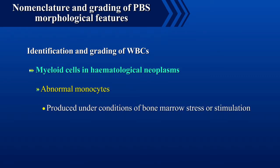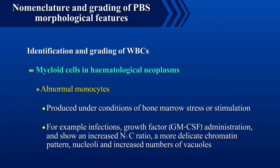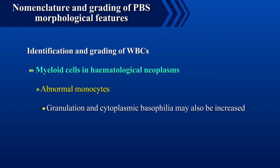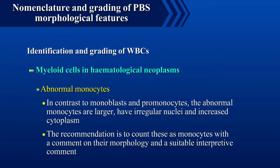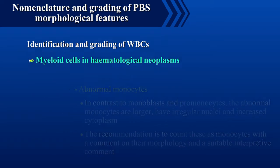Leukemic promonocytes should be summated with blast cells when making a diagnosis of AML. Abnormal monocytes are produced under conditions of bone marrow stress or stimulation, for example infections or growth factor administration like GM-CSF. They show an increased N:C ratio, a more delicate chromatin pattern, nucleoli, increased numbers of vacuoles, and increased granulation and cytoplasmic basophilia. Abnormal monocytes can be seen in a number of hematological neoplasms and, in contrast to monoblasts and promonocytes, are larger with irregular nuclei and increased cytoplasm. The recommendation is to count these as monocytes with a comment on their morphology and a suitable interpretive comment.